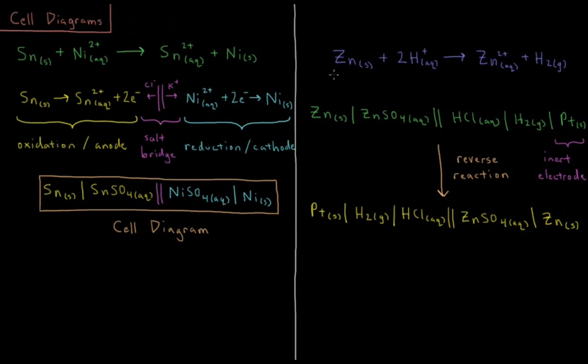Another potential half cell we could have is zinc solid plus two hydrogen aqueous cations reacting to form aqueous zinc 2+ cations plus H2 gas. In this case, there's a slightly different part of the half cell reaction that we have to include. Zinc to zinc sulfate is a standard kind of anode reaction.